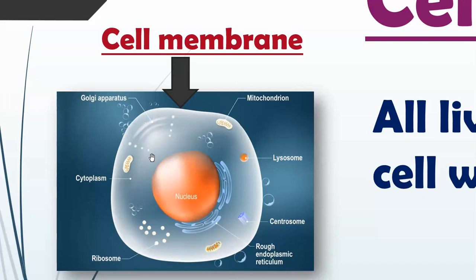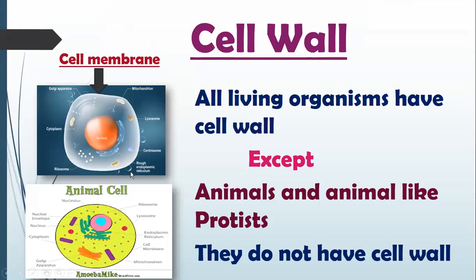Same is the case for the cell membrane. Inside the cell membrane, all organelles are present: nucleus, mitochondria, cytoplasm, ribosomes, lysosomes, centrosomes. But the outermost covering is the cell membrane, which is not rigid, not hard, not tough — it is a soft outermost membrane. All organisms have a cell wall except animals and animal-like protists; their outermost wall is called the cell membrane.